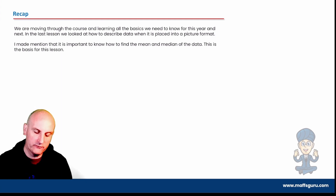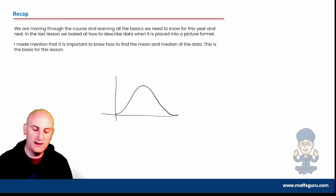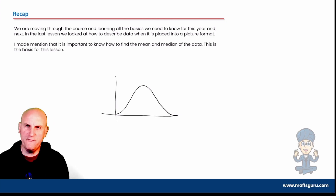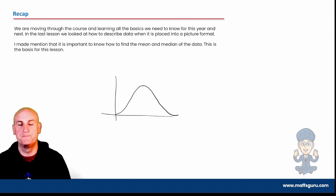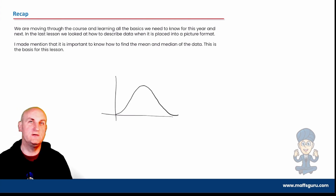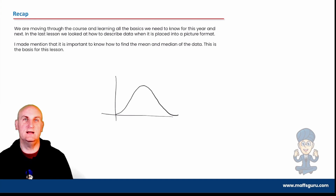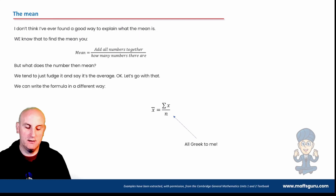We'll be talking about shapes of distributions. If you watched the previous video, you'll be able to identify whether a distribution is perfectly symmetrical, approximately symmetrical, positively skewed, or negatively skewed. If you haven't watched it, go over to mathsguru.com — you can also download all the notes from everything I write on the board.